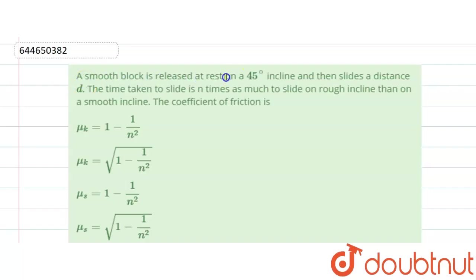The question is: a smooth block is released at rest on a 45-degree incline and slides a distance d. The time taken to slide is n times as much on a rough incline as on a smooth incline. We have to find the coefficient of friction.